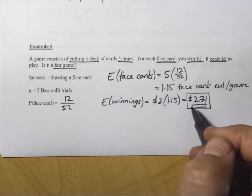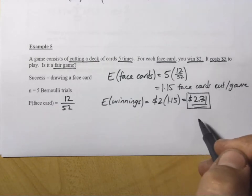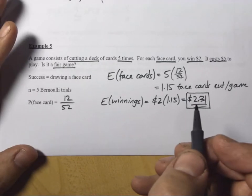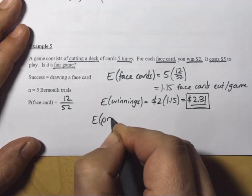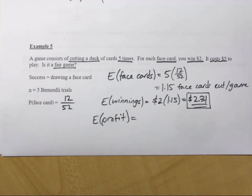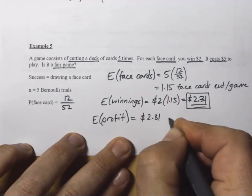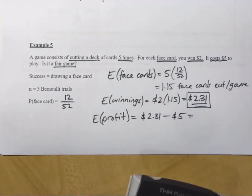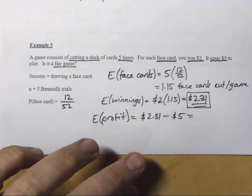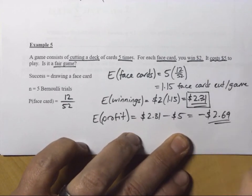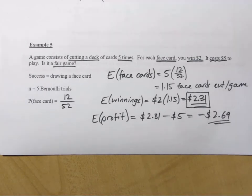Whose favor is this game in? The players or the dealers? And if you said the dealers, you're absolutely right. So, the expected profit now, not winnings, but profit per game, is how much I win per game minus how much I pay per game. And $2.31 minus $5 means I'm losing $2.69 every time I play this game. Definitely not a fair game.